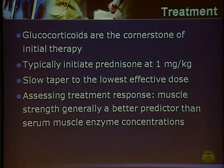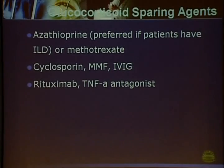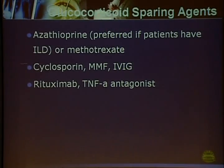For treatment, glucocorticosteroids remain the cornerstone treatment. Typically, we initiate prednisone at one milligram per kilogram and slowly taper to the lowest effective dose. Immunosuppressants like azathioprine or methotrexate can be used as corticosteroid-sparing agents. Other immunosuppressants like cyclosporine, mycophenolate, and large-dose intravenous immunoglobulins are useful in some patients.